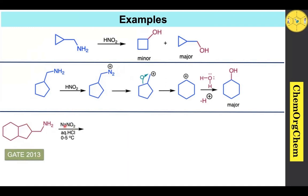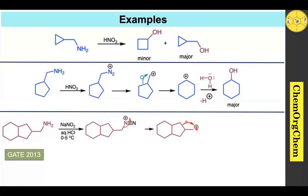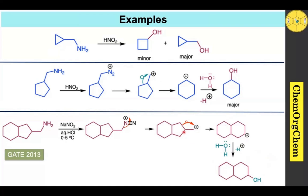When treated with nitrous acid and aqueous conditions, you quickly get the corresponding diazonium ion. After the diazonium ion loses nitrogen gas, the corresponding carbocation intermediate forms. A carbon migrates toward the carbocation center, resulting in ring expansion to generate the corresponding carbocation intermediate, which is readily trapped by water to provide the corresponding alcohol derivative.